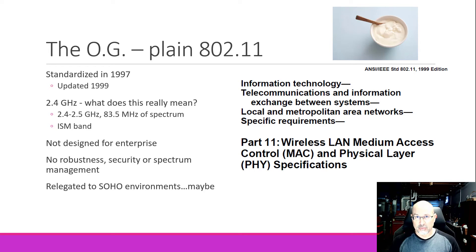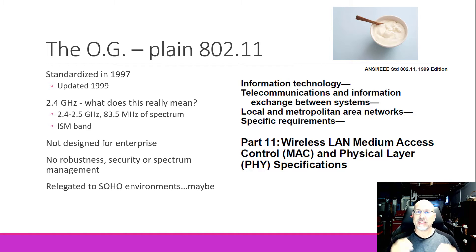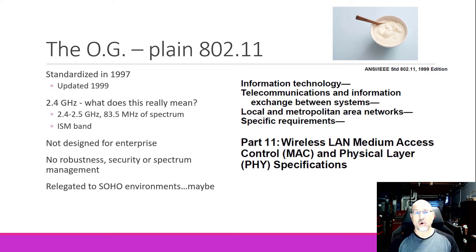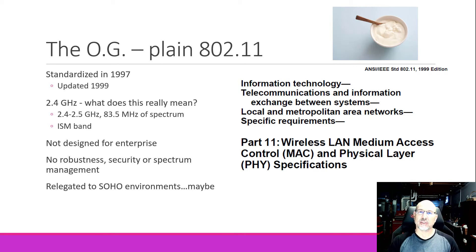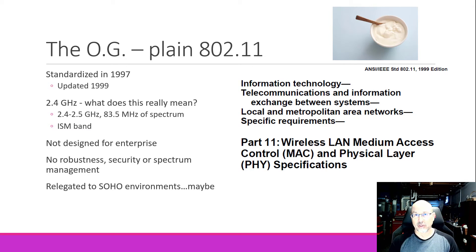The part of the spectrum we're always talking about is 2.4 GHz. When somebody says 2.4 GHz, what we're really talking about is a range of frequencies from 2.4 to 2.5 GHz, or about 100 MHz worth of spectrum. It's really a little bit less than that because we put space in between the channels, so we're really talking about 83.5 MHz of spectrum. This is also called the ISM band, and we'll talk about that here in a little bit.